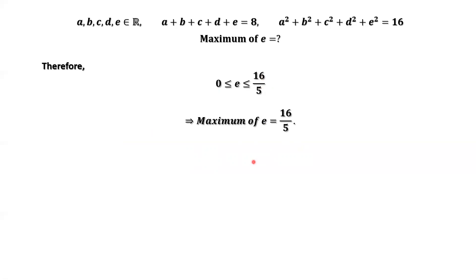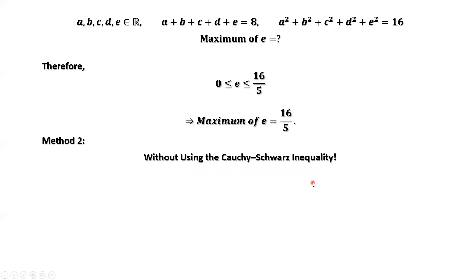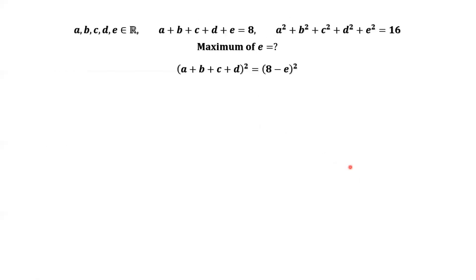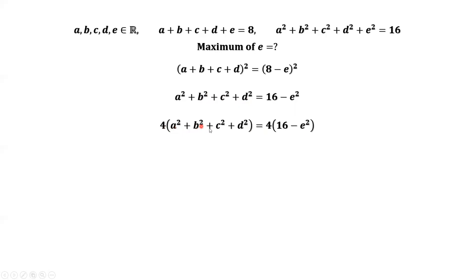We have done the first method. Now for method 2, without using the Cauchy-Schwarz inequality. From the first given condition, we have A plus B plus C plus D equals 8 minus E. Squaring both sides gives A plus B plus C plus D squared equals 8 minus E squared. From the second given condition, A squared plus B squared plus C squared plus D squared equals 16 minus E squared. Multiplying both sides by 4 gives 4 times A squared plus B squared plus C squared plus D squared equals 4 times 16 minus E squared.